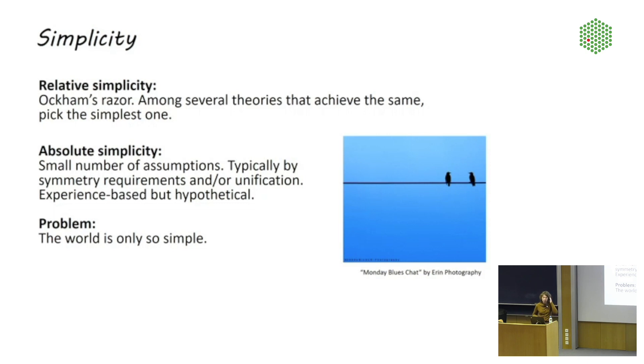Let me start with simplicity. So there is relative simplicity, which is a good scientific criterion. This is not what I'm talking about. This is basically Occam's razor that says, among several theories that achieve the same, you pick the simplest one. And so that's all well and fine. This is not what I'm talking about. I'm talking about absolute simplicity. You want a theory that is simple, period, in the sense that it has very few assumptions.